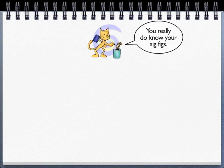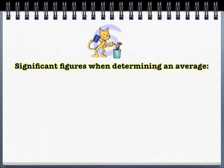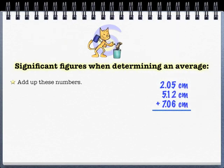It's the same thing for averages. Treat an average like an addition-subtraction problem, because it starts like that. If I added up these three numbers, I'd get a legitimate answer of 14.23.